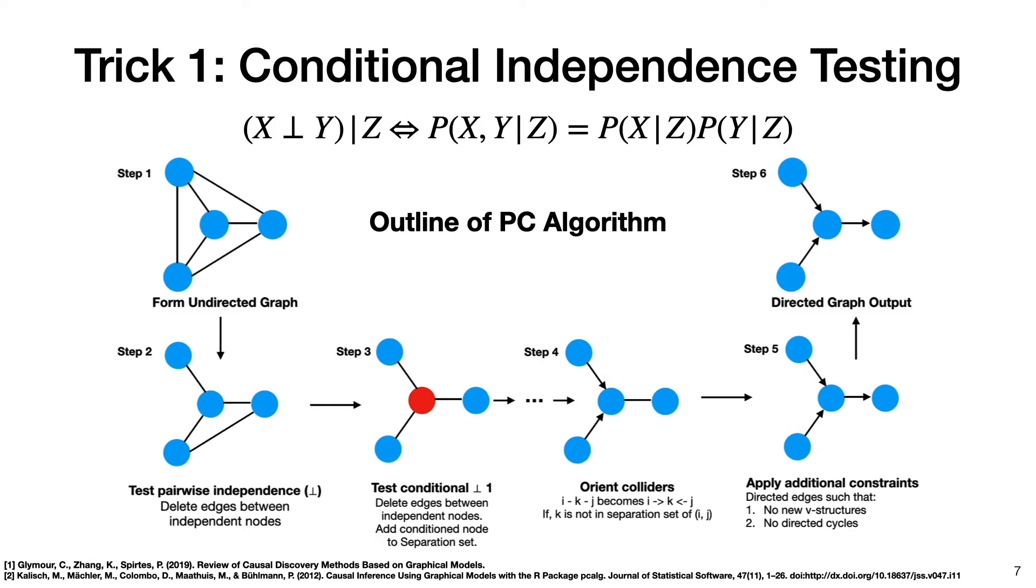We can use this idea of conditional independence testing to do causal discovery. And this is actually the main idea behind one of the first causal discovery algorithms called the PC algorithm, which is named after its authors, Clark Glymore and Peter Spirtz. I probably butchered that, so I apologize. But there's a reference to a review paper by them at the bottom here. So I'll just briefly go through the main idea of the PC algorithm. More details can be found in the blog linked in the description. The first step is to form a fully connected undirected graph.